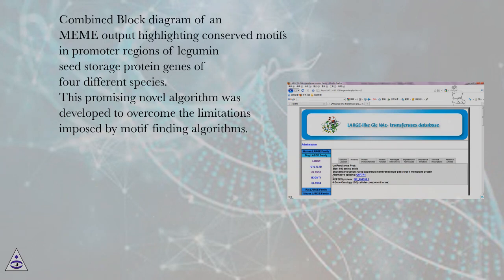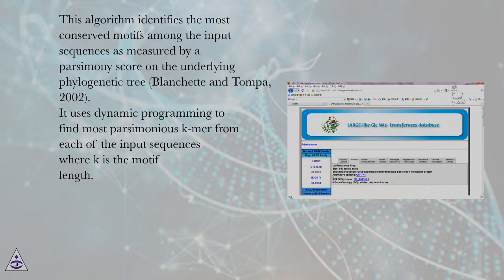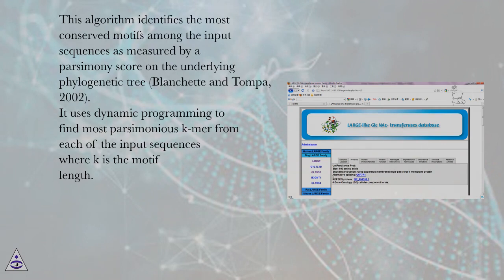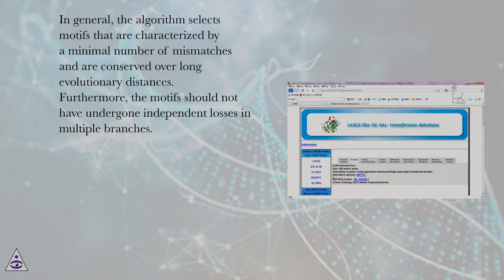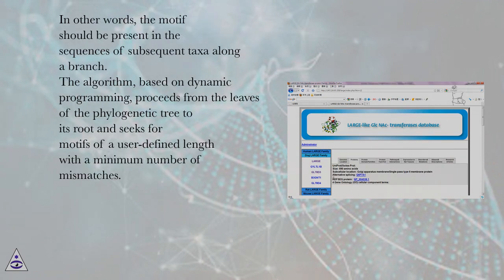A promising novel algorithm was developed to overcome the limitations imposed by motif-finding algorithms. This algorithm identifies the most conserved motifs among the input sequences as measured by a parsimony score on the underlying phylogenetic tree (Blanchet and Tompa, 2002). It uses dynamic programming to find the most parsimonious k-mer from each of the input sequences, where k is the motif length. In general, the algorithm selects motifs characterized by a minimal number of mismatches that are conserved over long evolutionary distances. Furthermore, the motif should not have undergone independent losses in multiple branches — in other words, the motif should be present in the sequences of subsequent taxa along a branch.